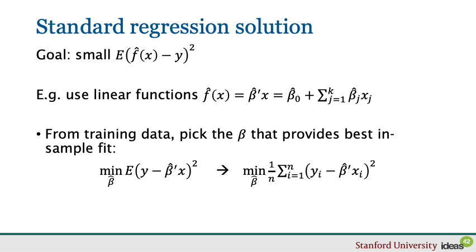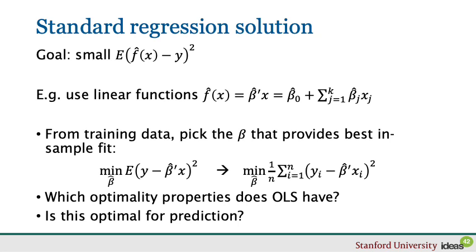What does linear regression do? It says my goal is to minimize the out-of-sample mean squared error. The best thing I can do is simply look at the data I have and ask which set of coefficients minimizes the error within that data. We know by Gauss-Markov that if error terms are homoscedastic, OLS is the unbiased estimator of the coefficient beta with the lowest variance among all unbiased estimators.